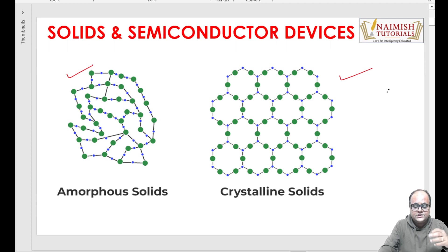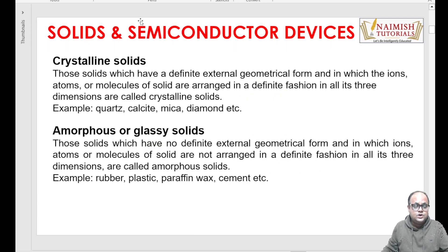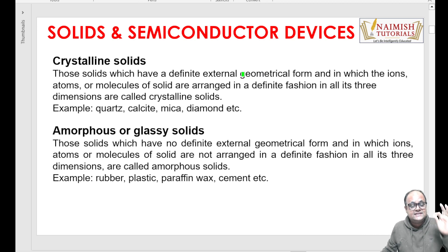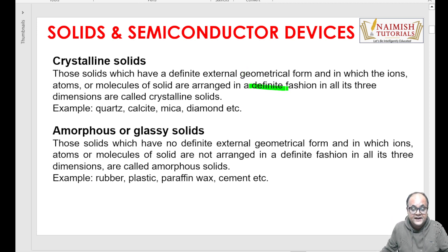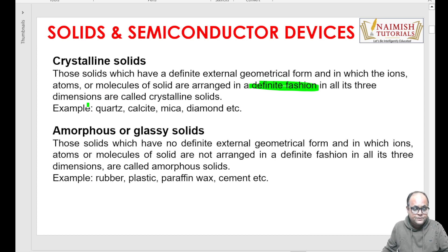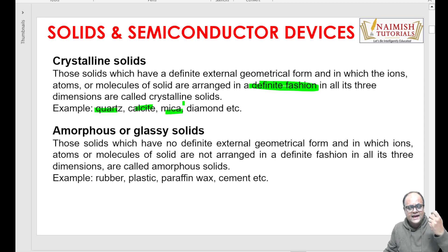Aur doosra diagram dekho - you can easily notice ki ek proper arrangement hai, jisse yeh saare atoms ya molecules placed hain apni apni position pe. Is diagram ke basis par, we can say that crystalline solids - yeh waale - crystalline solids woh solids hain jahan par the atoms, molecules, aur constituent particles are arranged in a certain specific manner. There is a definite fashion in which they are arranged. Examples: wards, mica, silica, etc.